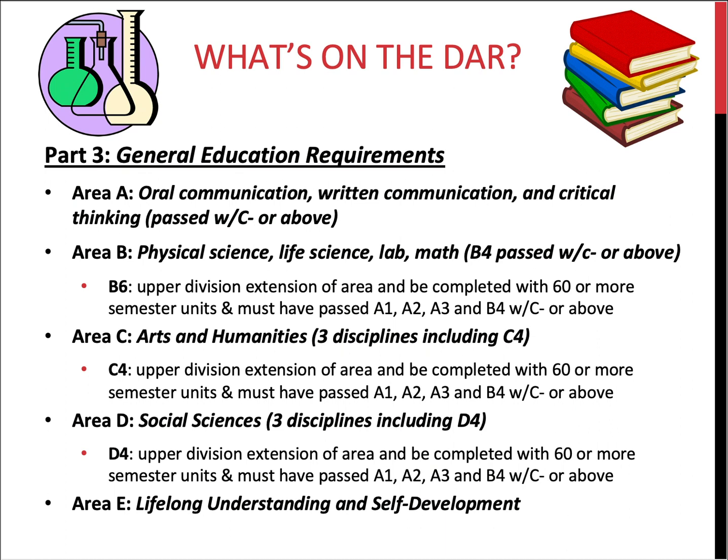All of Area C must follow the three-discipline rule, meaning that between the three lower division and the one upper division course, there need to be courses from at least three different areas of study — for example, music, theater, philosophy, or English. Area D consists of three lower division social science courses and also requires the three-discipline rule, which can include the upper division course. Area E is a course in lifelong understanding and self-development.